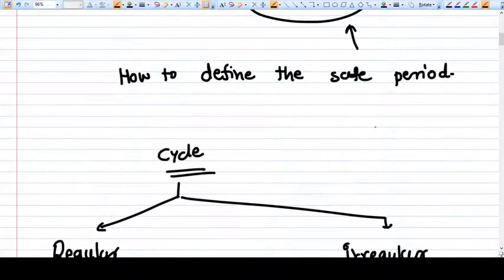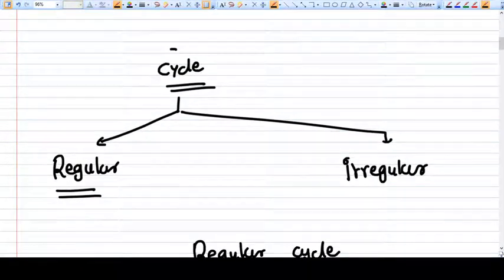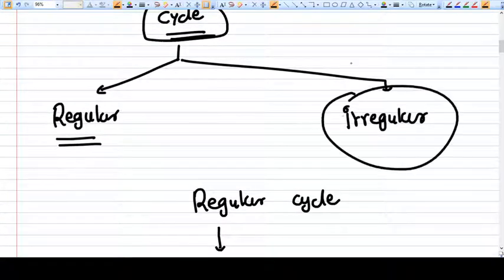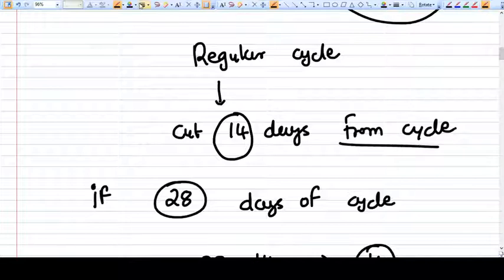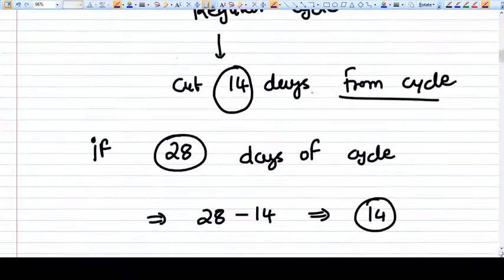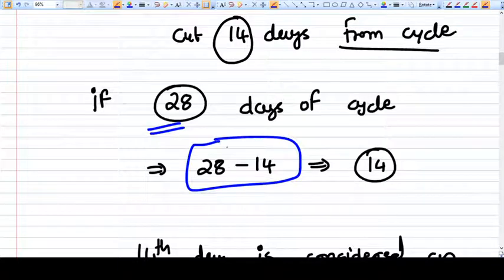This is done with this method. Suppose if some patient have either a regular cycle or irregular cycle. In case of regular cycle we need to cut 14 days from the cycle. For example, if this patient have a 28-day cycle, then we need to cut 14 from the 28, so 14 remains. So the 14th day is considered or presumed as ovulation day.